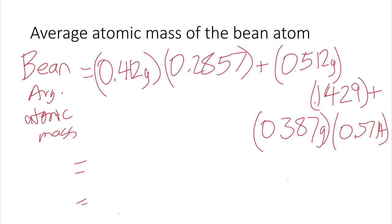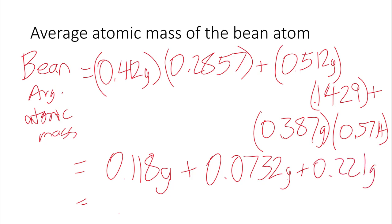So I'm going to do the calculations on my calculator on the side rather than show it to you on the screen, but you can type it in. It is 0.412 times 0.2857 is 0.118 grams with the rounding, and it's only three sig figs because 0.412 is three sig figs. 0.512 times 0.1429 is 0.0732 grams, again with three sig figs. And then 0.387 times 0.5714 is 0.221 grams. And now when you add all that together, 0.221 plus 0.0732 plus 0.118, just did that in reverse. Sorry if that confused you.